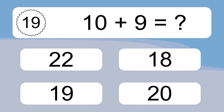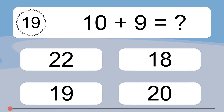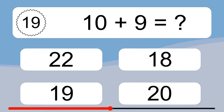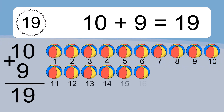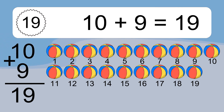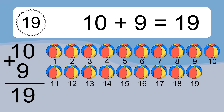10 plus 9 equals what? Ten plus nine equals nineteen. Let's count it: one, two, three, four, five, six, seven, eight, nine, ten, eleven, twelve, thirteen, fourteen, fifteen, sixteen, seventeen, eighteen, nineteen.